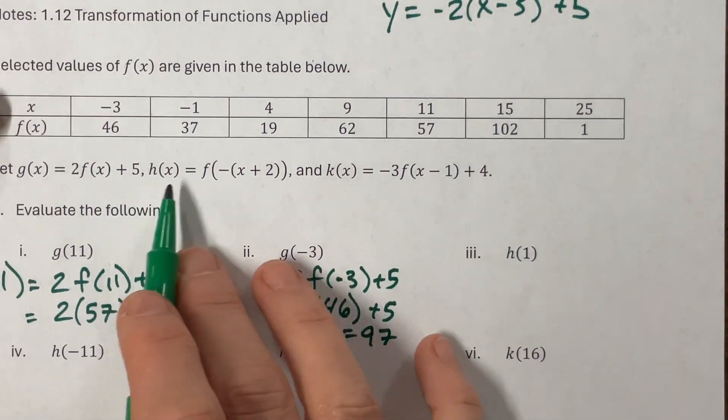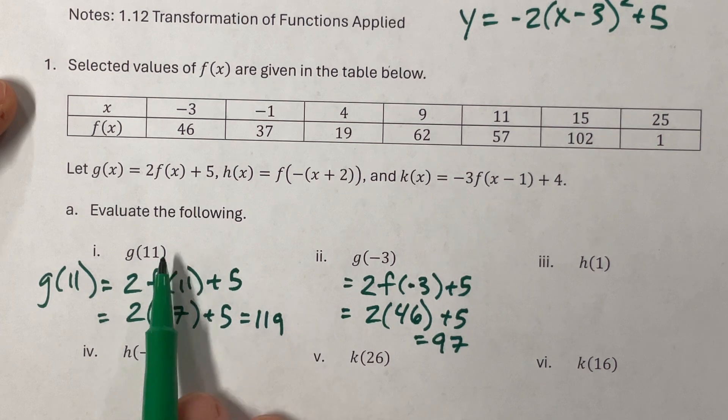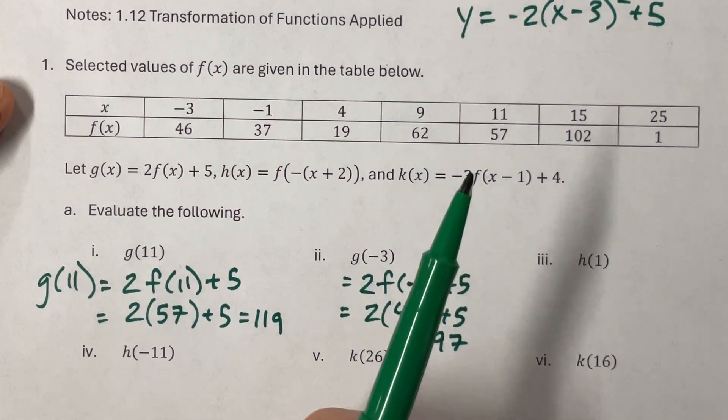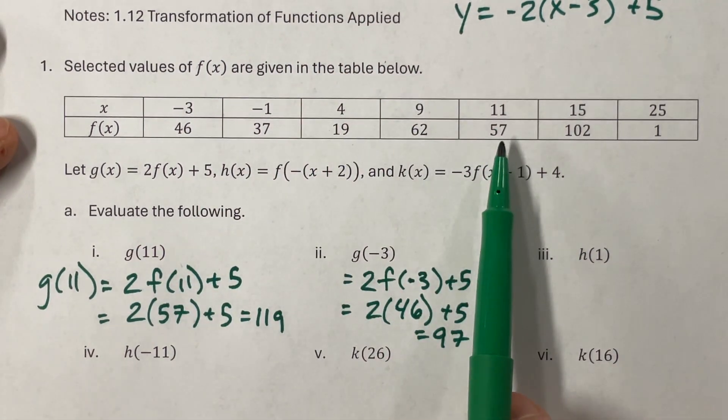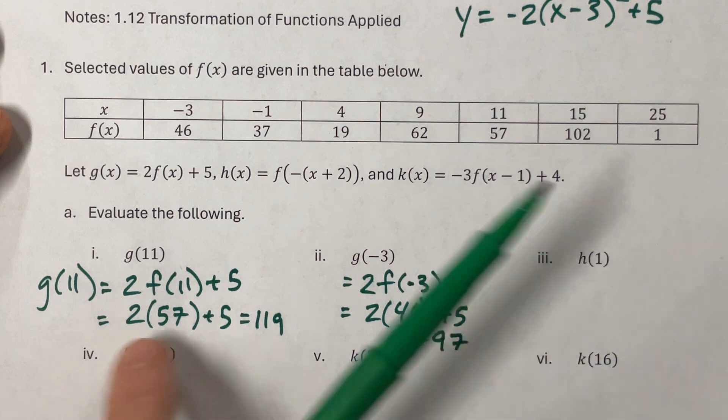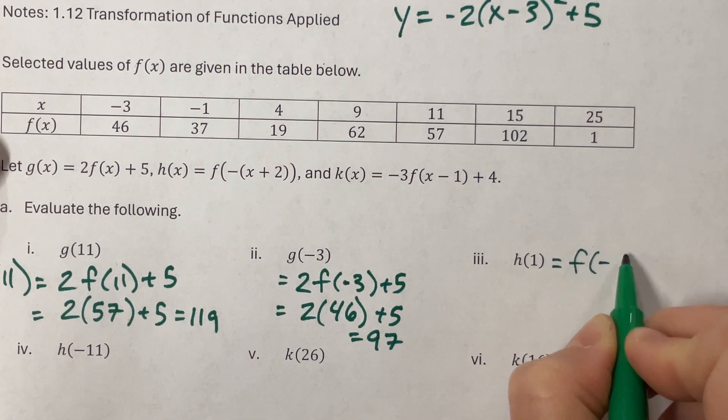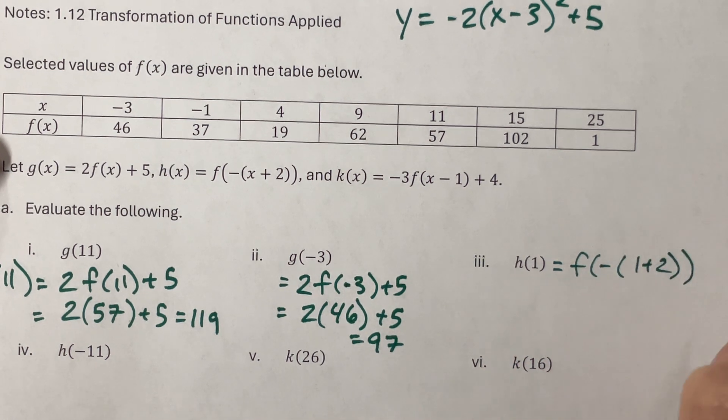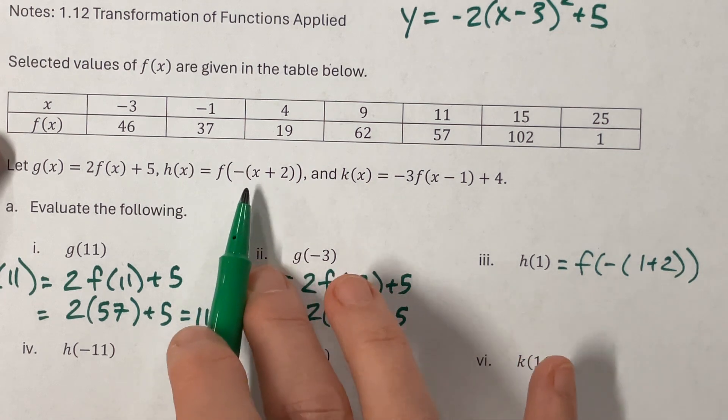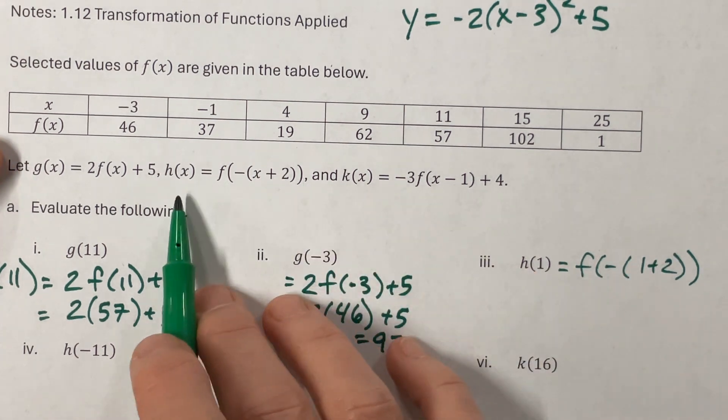Now we look at the function H. And H has, but we can also, with each of these, we can also think about this intuitively. And what it is, is we go to our function, so like G of 11 would go to F of 11, and vertically dilate it by a factor of 2. So if we look at this, we would take that number, multiply it by 2, and then shift it up 5. I found it kind of straightforward to just plug it into the equation and work from there.